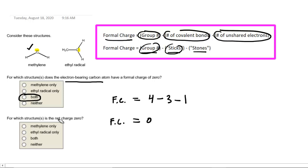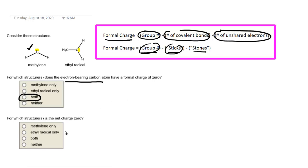The first half of the question has been accomplished. Let's look at the second half. The second half asks which structures have a net charge of 0. In order to calculate the net charge on the entire molecule, we will need to know the formal charges of each of the individual atoms within the molecule.